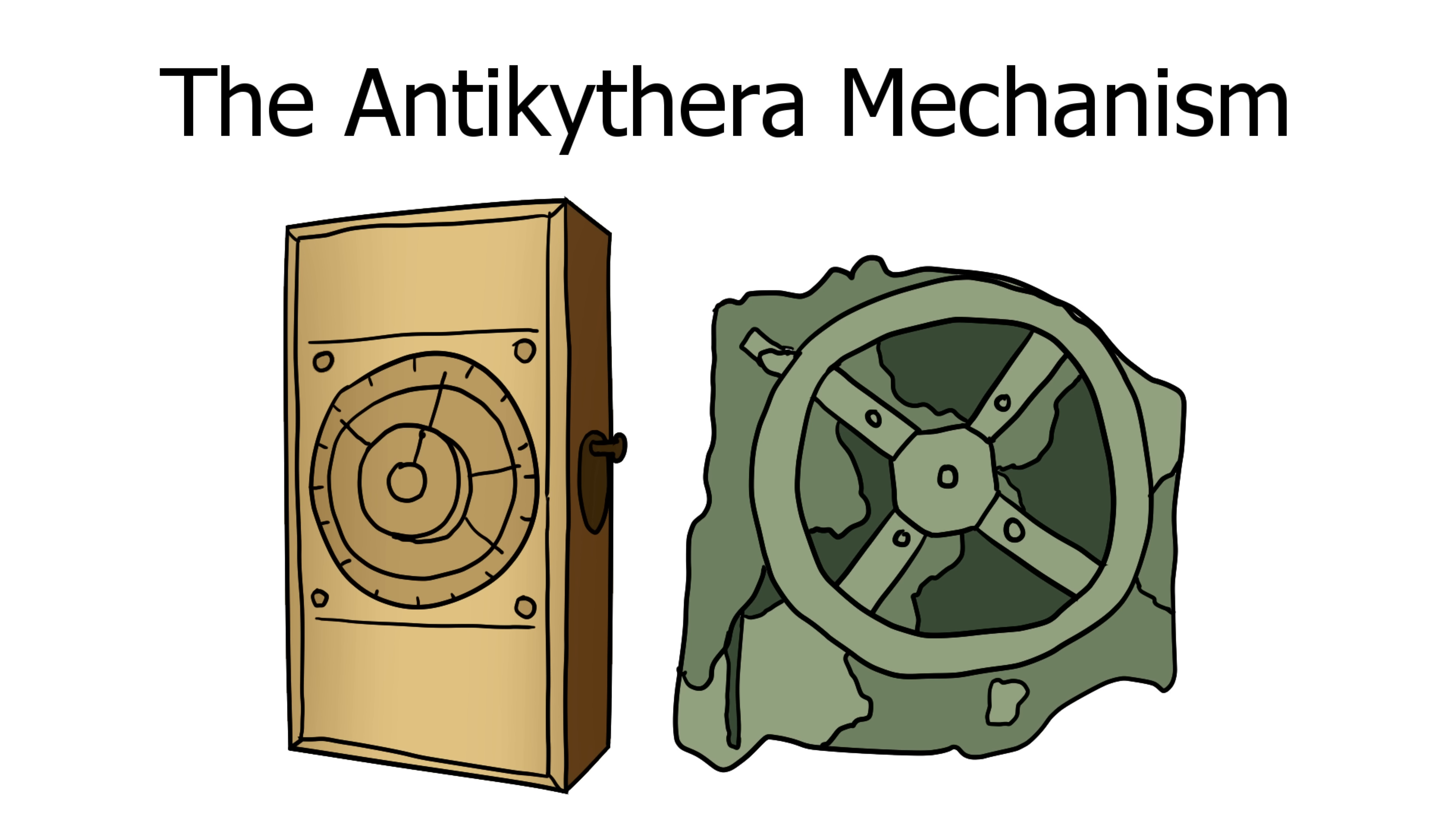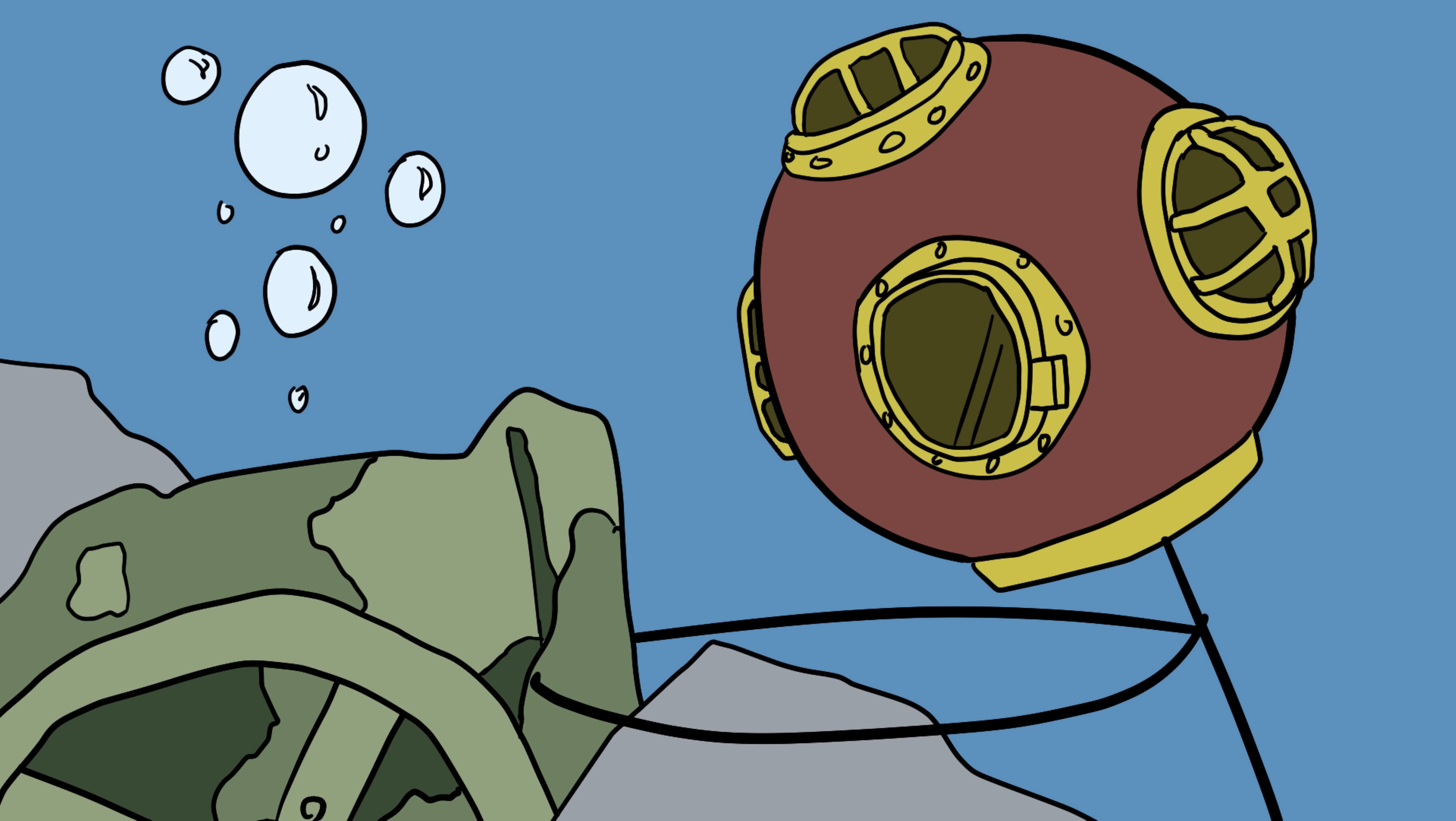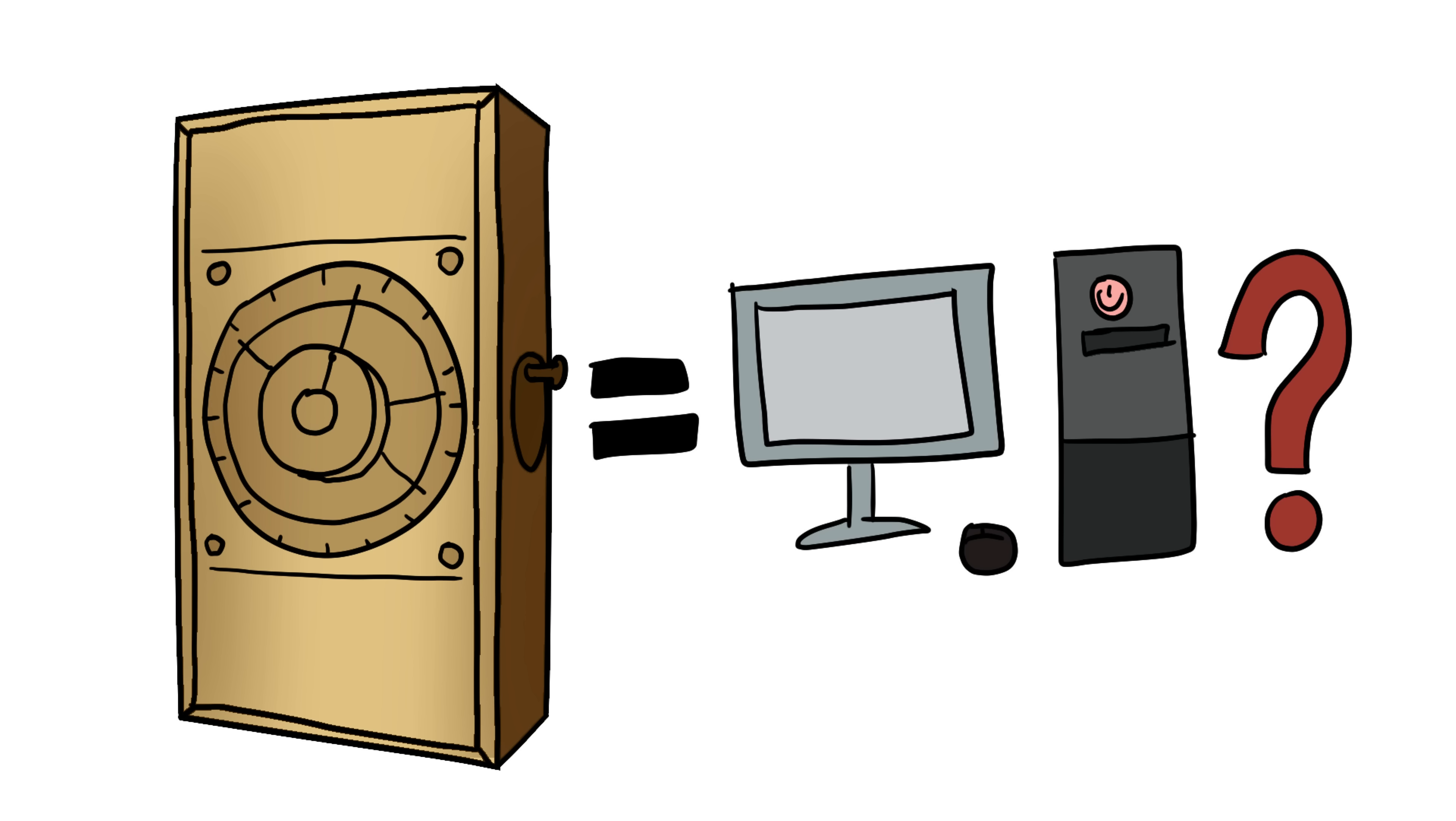Number one, the Antikythera Mechanism. In 1901, sponge divers off a small Greek island found what looked like a lump of bronze junk. Decades later, researchers realized it was something extraordinary. A device now known as the Antikythera Mechanism. Inside that corroded box were gears so precise they could model the movements of the sun, moon, and planets. Many call it the world's first computer.